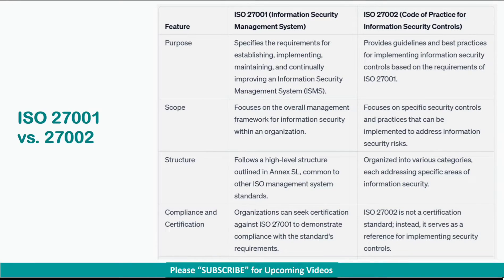ISO 27001 follows a high-level structure outlined in Annex SL, common to other ISO management system standards. ISO 27002 is organized into various categories, each addressing specific areas of information security.